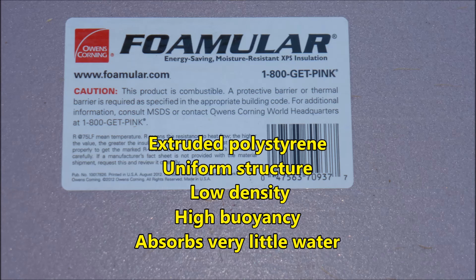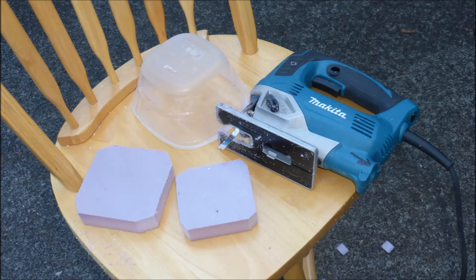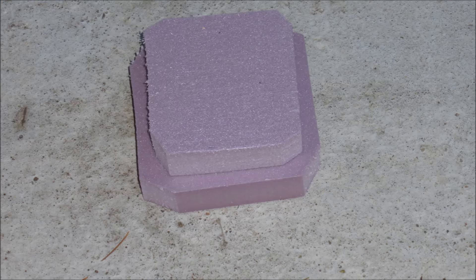Extruded polystyrene has a uniform structure, low density, high buoyancy, and absorbs very little water and is preferred over expanded polystyrene. Cut a 3 and 3 quarter inch square and also a 4 and a half inch square and trim corners as needed so they fit into the container.